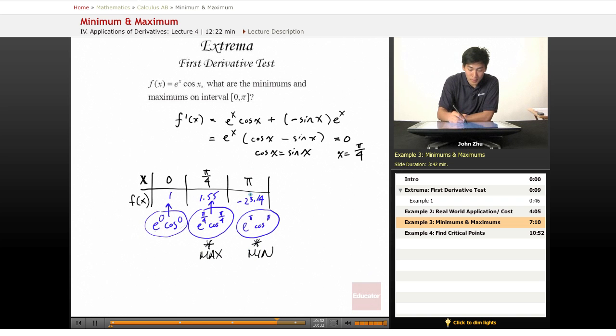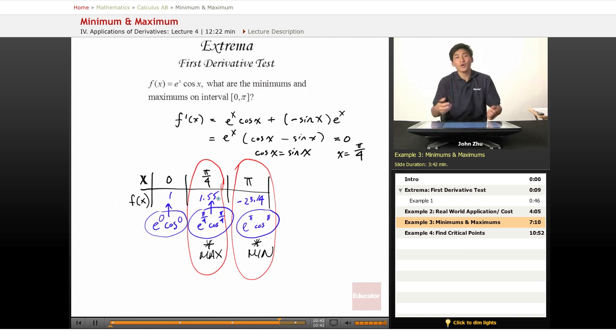So here is the max, and here is the min. So all we're doing is finding the critical points and evaluating the function around those critical points to see the behavior of the graph, and that is the first derivative test. Thank you.